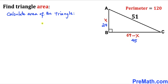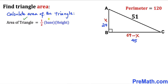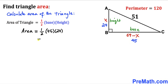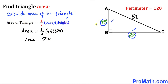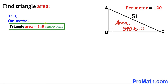For the final step, we calculate the area of triangle ABC. Recalling the formula: area equals one half times base times height, where the height is 24 and the base is 45. So area equals one half times 45 times 24, which simplifies to 540 square units. Whether we assign 24 or 45 to height versus base makes no difference — the area of triangle ABC is 540 square units.